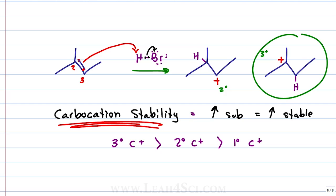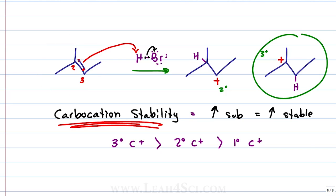What is it about the more stable carbocation that tells us which product will form? It's a kinetics thing — reaction speed. Reactions are only as fast as their slowest step. The alkene is relatively stable and when it attacks that hydrogen, it forms an unstable intermediate. The tertiary carbocation is more stable than the secondary, but that's simply the lesser of two evils. Therefore, the more stable the intermediate, the more likely and the faster it's going to form.